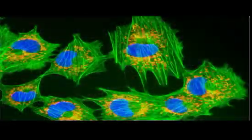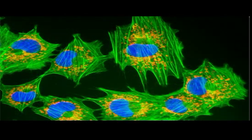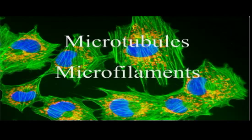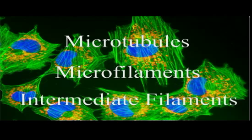The three types of protein fibers that make up the cytoskeleton are thick microtubules, thin microfilaments, and medium-size intermediate filaments.